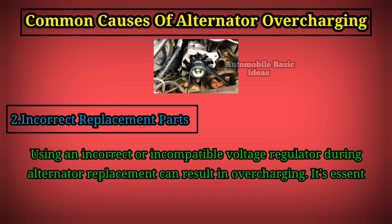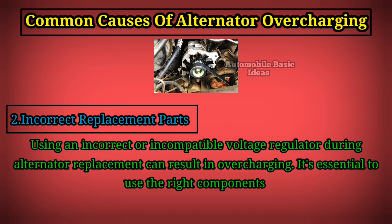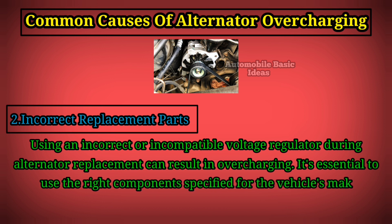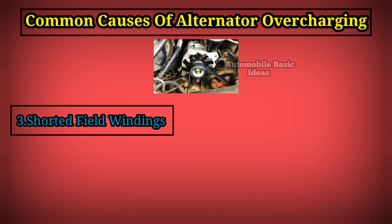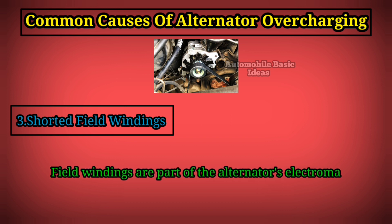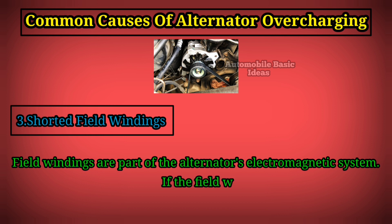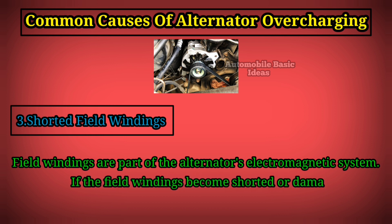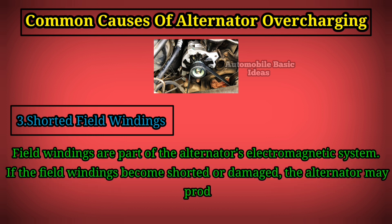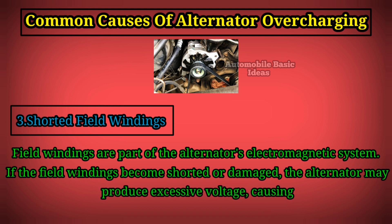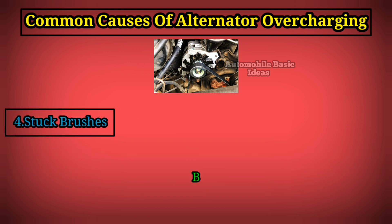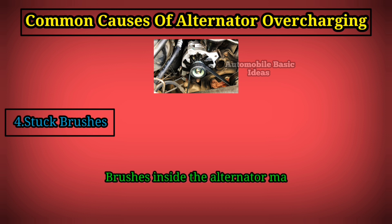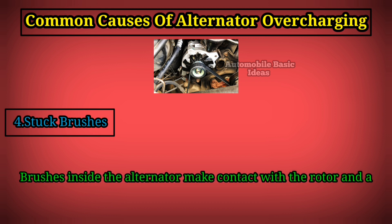It's essential to use the right components specified for the vehicle's make and model. 3. Shorted field windings: Field windings are part of the alternator's electromagnetic system. If the field windings become shorted or damaged, the alternator may produce excessive voltage, causing overcharging. 4. Stuck brushes: Brushes inside the alternator make contact with the rotor and are crucial for regulating the electrical output.